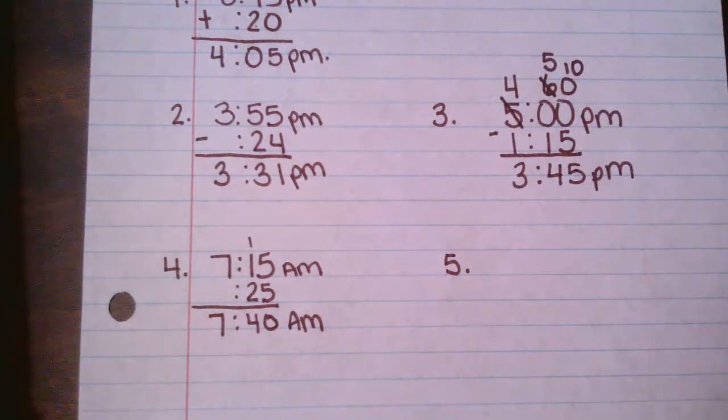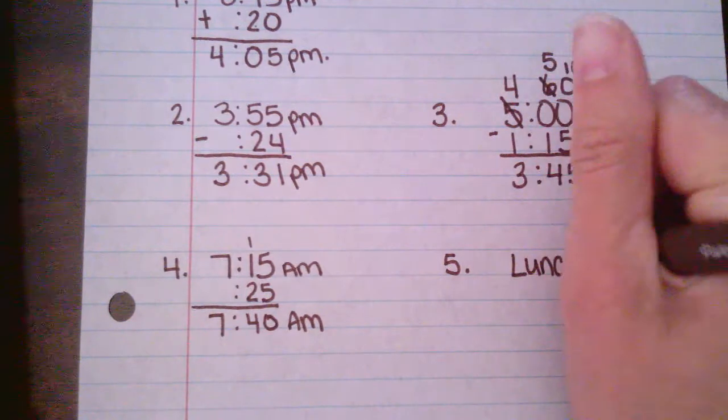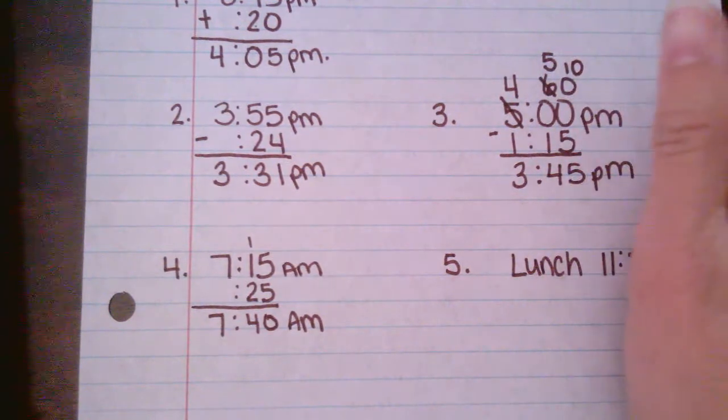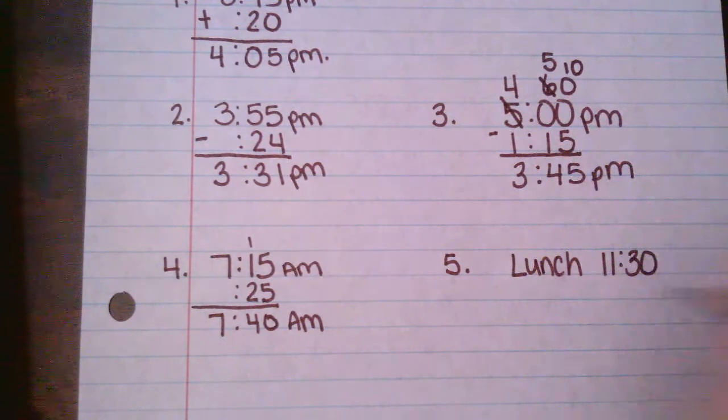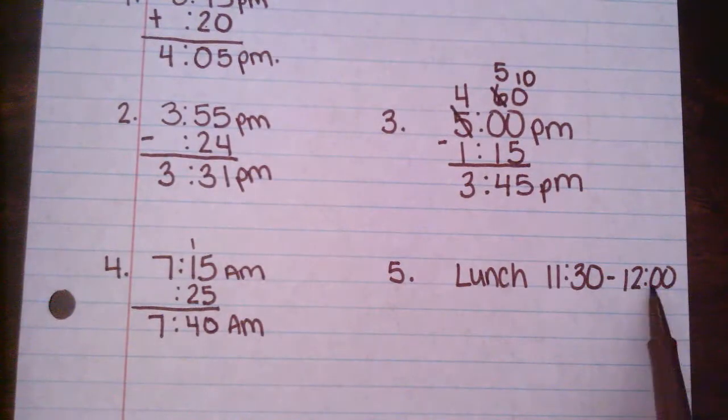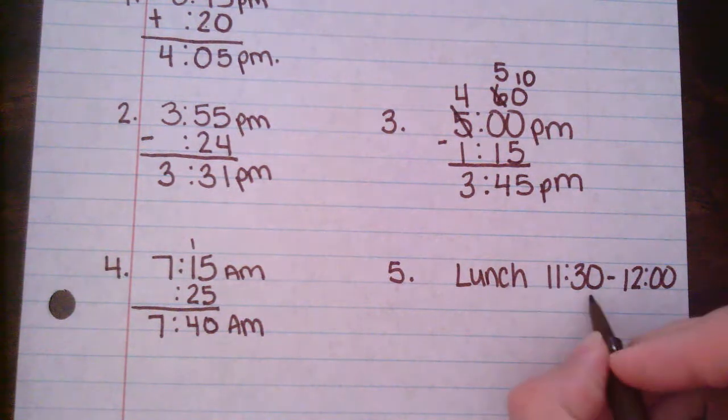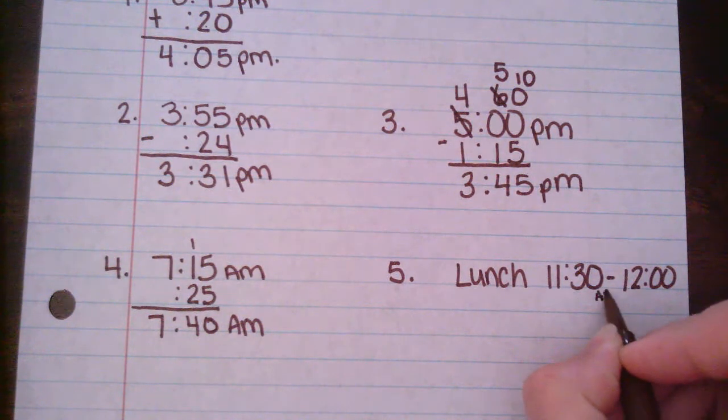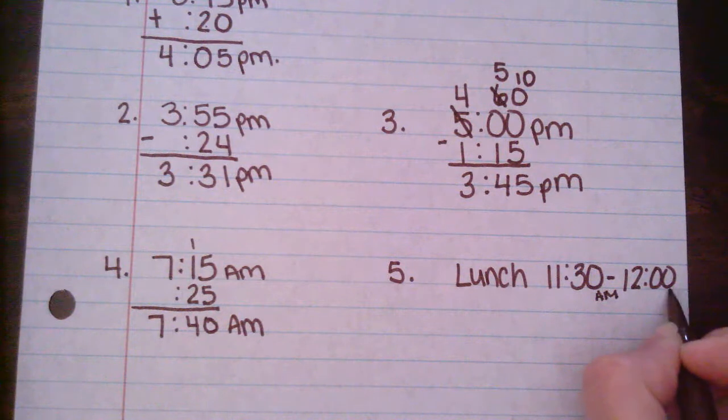Well, a.m. is in the morning and p.m. is in the evening. And sometimes if you guys are thinking about lunch, we start lunch at 11:30 and we end at 12 o'clock. But if I was to say 11:30 a.m. to 12 o'clock a.m., that means I'm going all the way until midnight. So I need to know that this one is a.m. and the 12 o'clock is p.m.